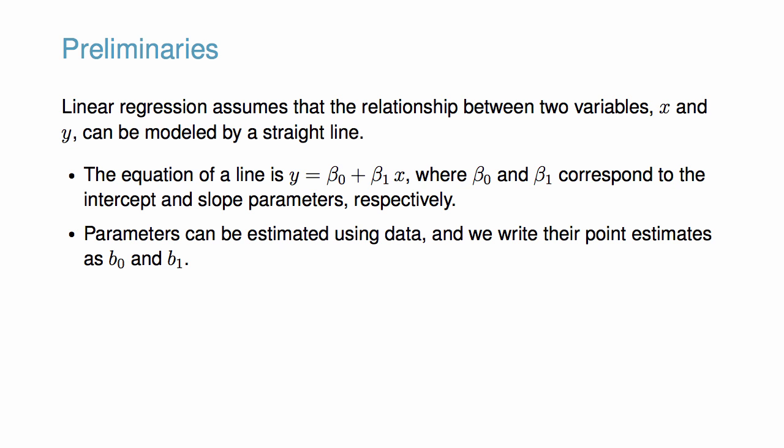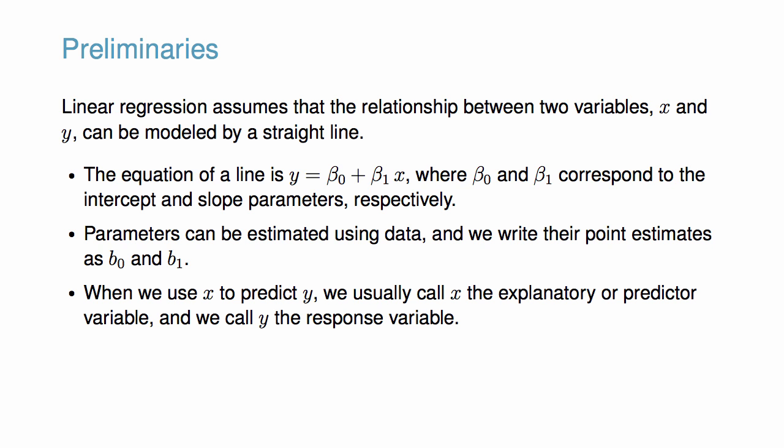We will see that these parameters can be estimated using data, and we write their point estimates as b0 and b1. One last point: when we use x to predict y, we usually call x the explanatory or predictor variable, and we call y the response variable.